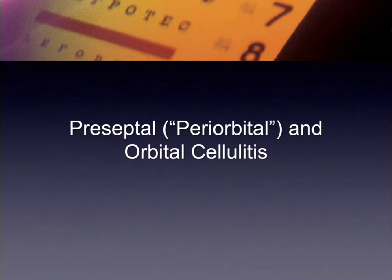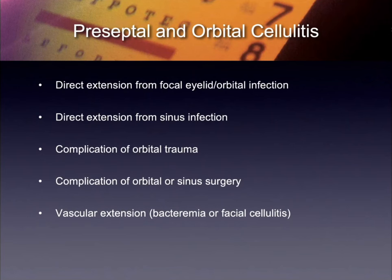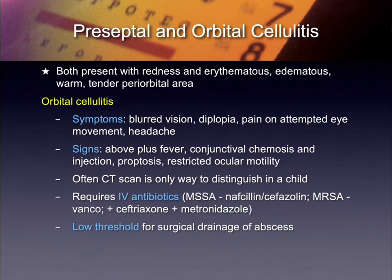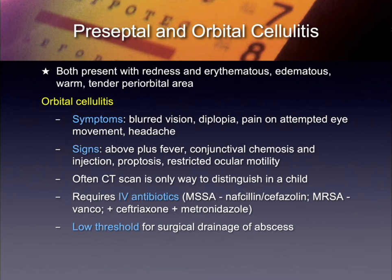Now we're moving out of what's inside the eye to what's outside — preseptal and orbital cellulitis. The old name for preseptal was periorbital, because it wasn't inside the orbit. How do you get cellulitis in these areas? It's either direct extension from a focal eyelid or orbital infection, extension from a sinus infection, orbital trauma, surgery, or it may come through the blood vessels — a vascular extension of bacteremia or facial cellulitis. And what's one of the things you tell people not to do if they've got a pimple on their nose? The danger triangle. The worst thing that can happen from that is cavernous venous thrombosis — infected cavernous venous thrombosis is even worse.